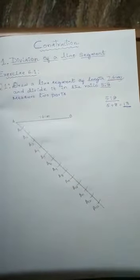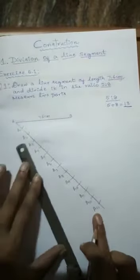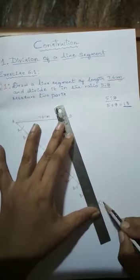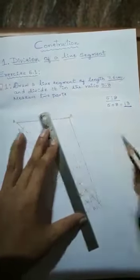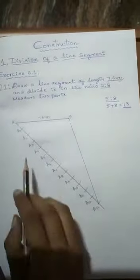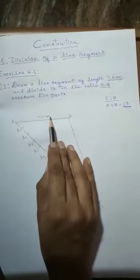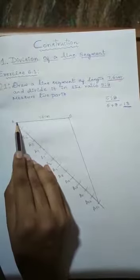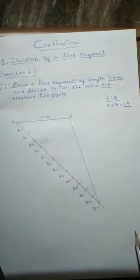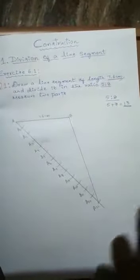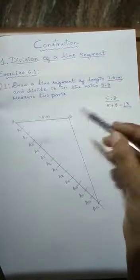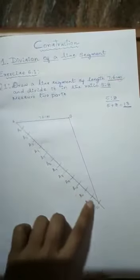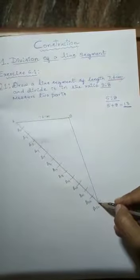Next step is joining B to the last point, which is A13. Join A13 to B. So: first step, take line segment AB of 7.6 cm and draw an acute angle of 45 degrees at point A; draw a ray and divide it into 13 equal parts by taking 1 cm on the compass; next, join B to A13.